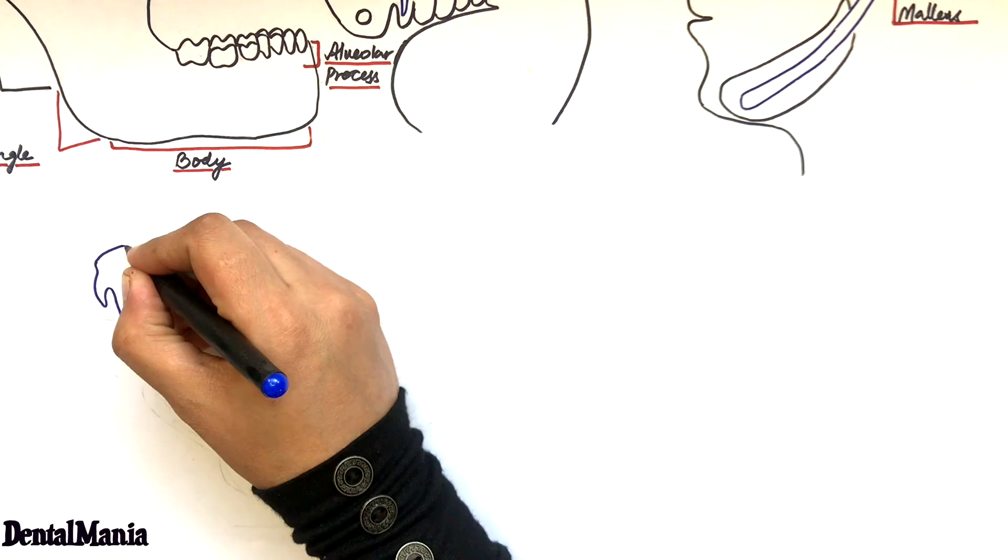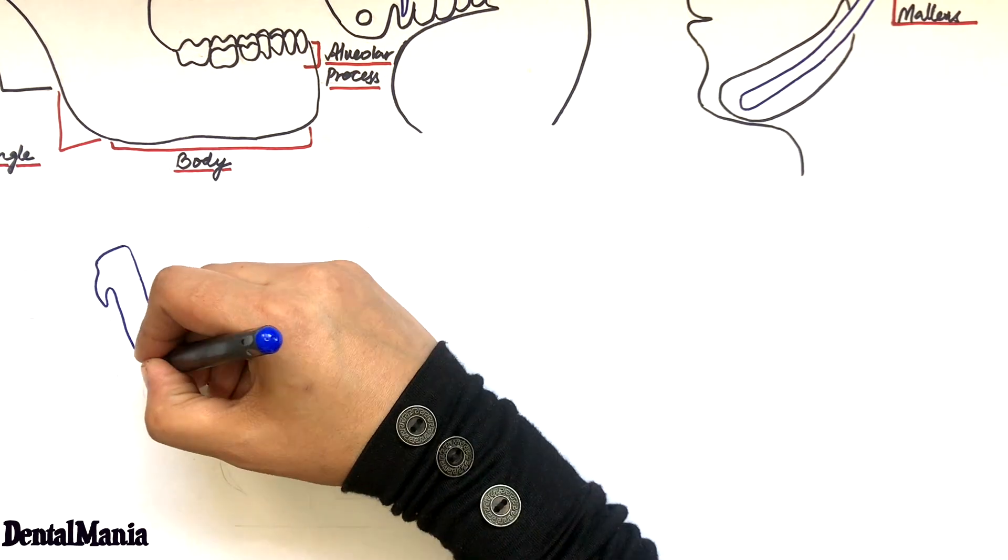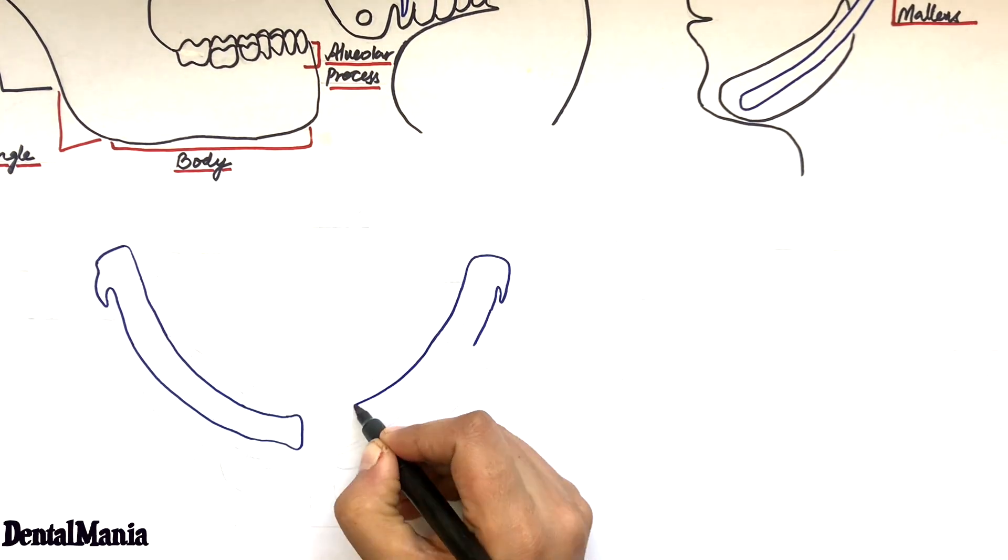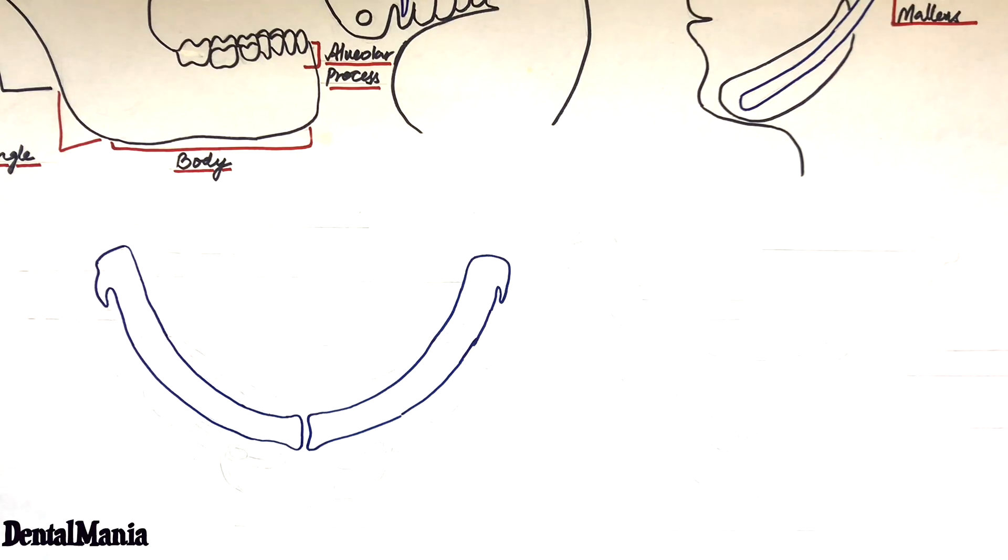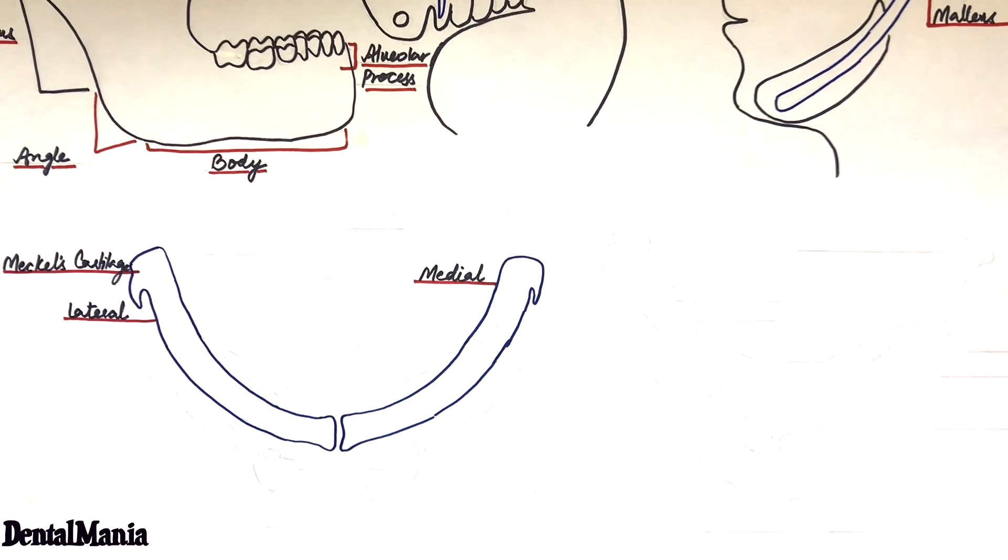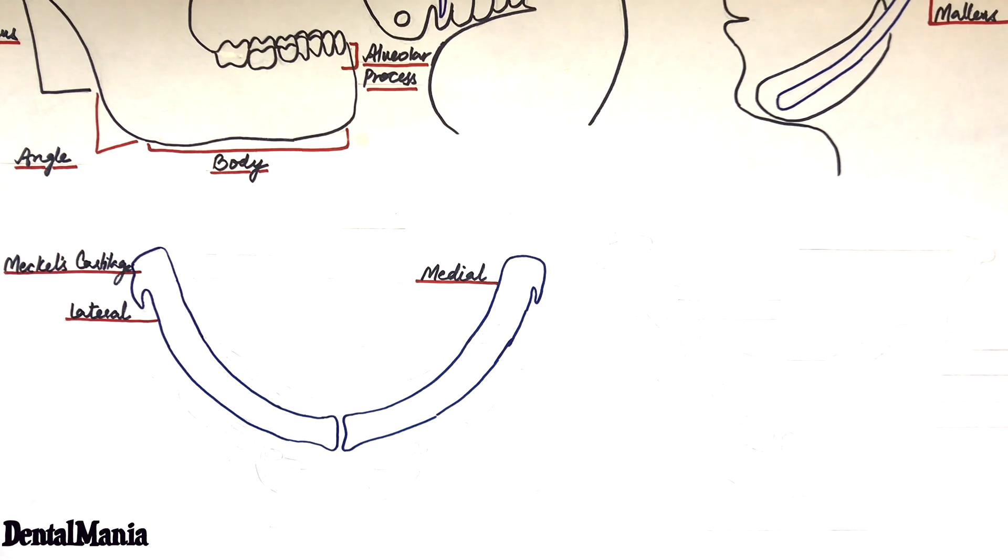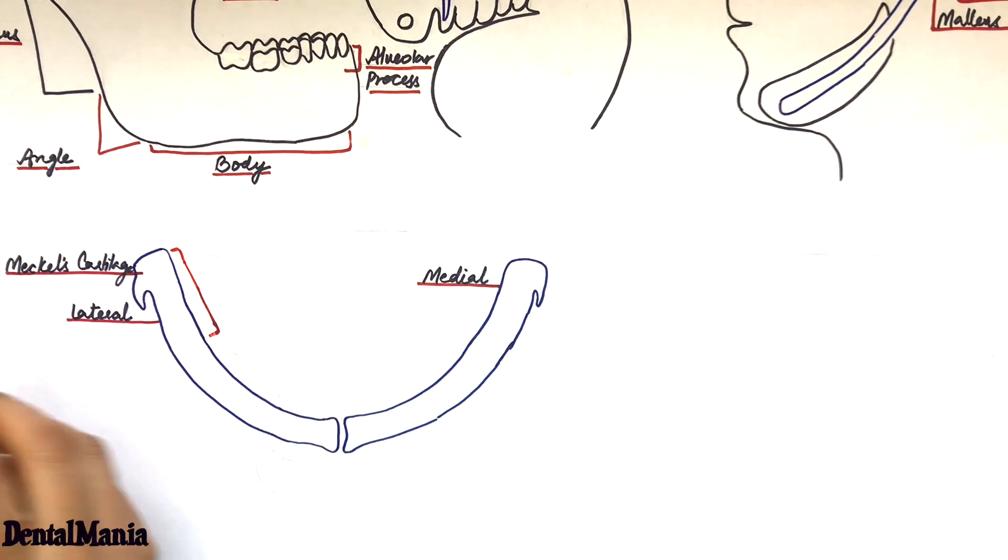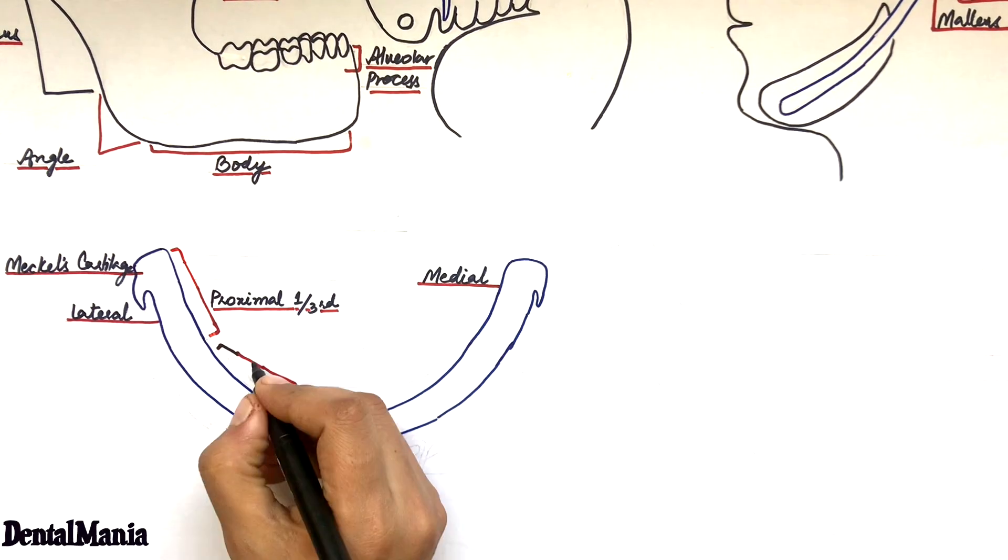Let's have a bilateral and superior view of the Meckel's cartilage and look at how the development of the mandible essentially takes place. The Meckel's cartilage will have a lateral aspect and a medial aspect. For simplicity of understanding, let's divide the Meckel's cartilage into three parts: the proximal or posterior one-third, the medial one-third, and the distal or anterior one-third.